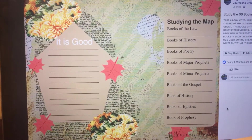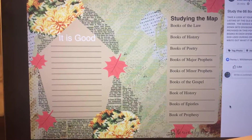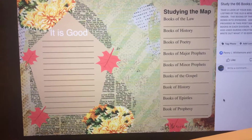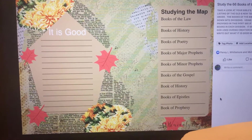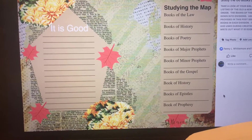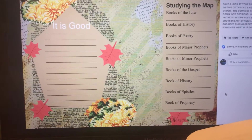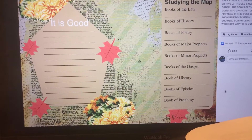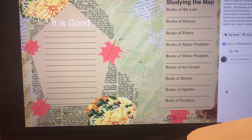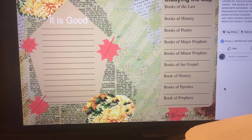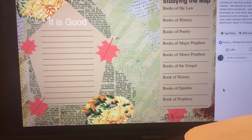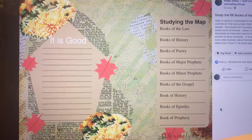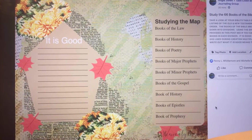Next we will move from here into the book of Genesis. When we look at the book of Genesis, we'll look at who the author is, who is the audience, the theme of the book, some key insights, and then we'll break the readings down into several books at a time.